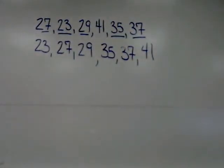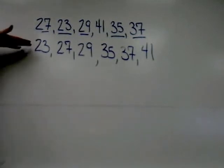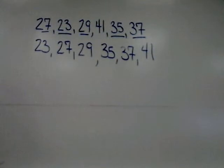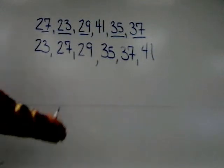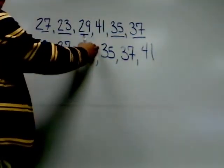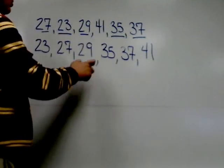After we've arranged the numbers in order from least to greatest, then we have to identify the middle number or numbers of the ordered data set. So if we find the middle of this list, the middle would be right here. There's actually two numbers in the middle: 29 and 35.